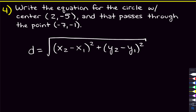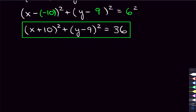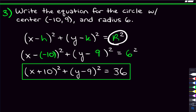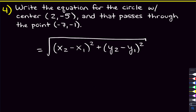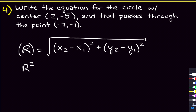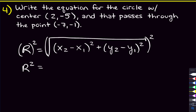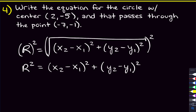Here's a tip: we actually want r squared for the circle equation, not r. So instead of dealing with the square root, we square both sides. That gives us: r squared equals (x2 minus x1) squared plus (y2 minus y1) squared. I'll call the point on the circle my second point and the center my first point, then plug in.